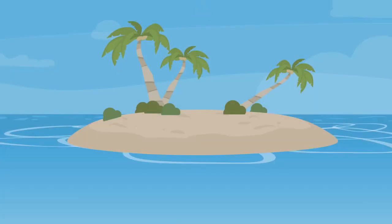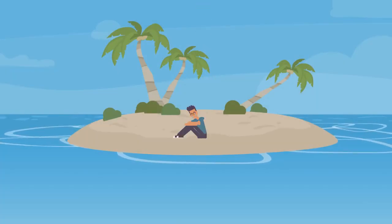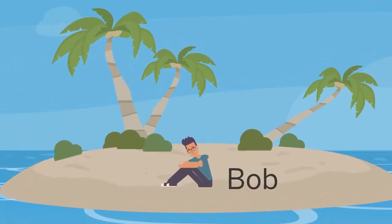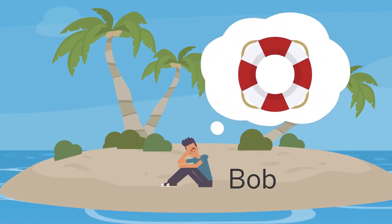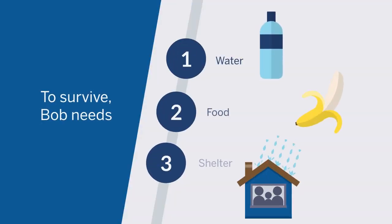Imagine, for example, if a single person were stranded on a deserted island. For this person — let's call him Bob — the top priority is obvious: survival. He needs water, food, and shelter.